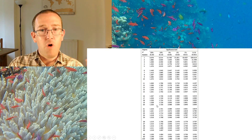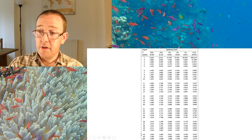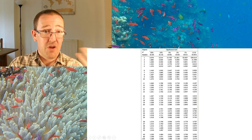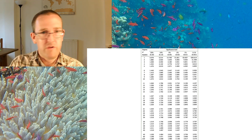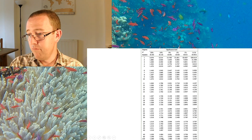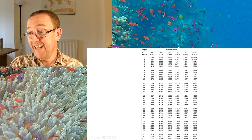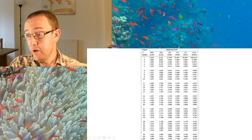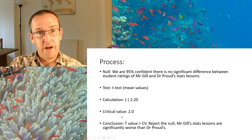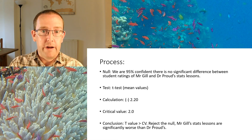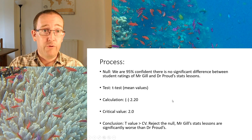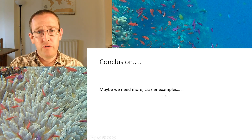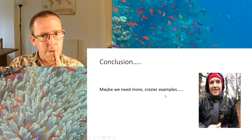We have a larger sample size so we use a larger table. Degrees of freedom: we add up all the people — 50 in both categories gives 100, minus 2, so we're at 98. That puts us around the 2 mark on the critical value table. Critical value is approximately 2; our calculation is minus 2.2. The t-value is greater than the critical value, so we reject the null. Mr Gill's stats lessons are significantly worse than Dr Proud's. The conclusion, of course, is that maybe we need more and crazier examples.